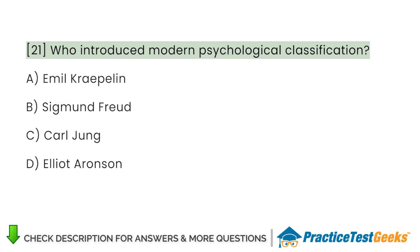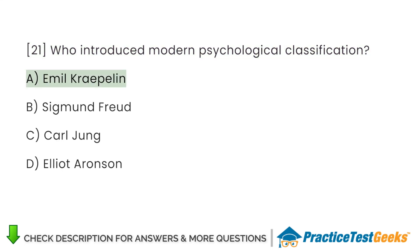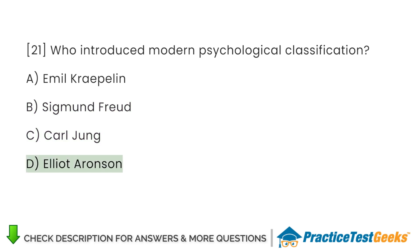Who introduced modern psychological classification? A. Emile Kreppelin B. Sigmund Freud C. Carl Jung D. Elliot Aronson